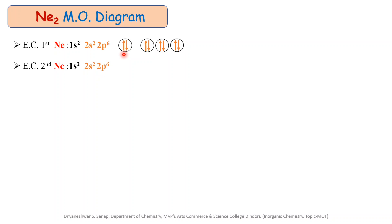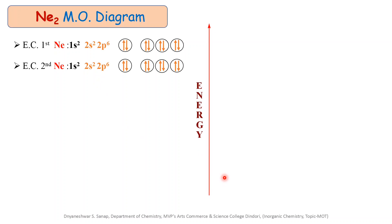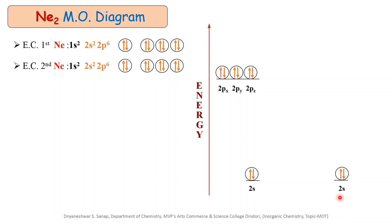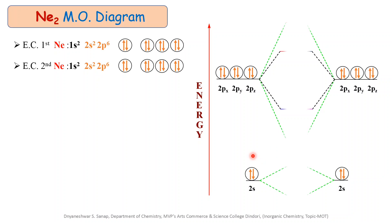Let us write this electronic configuration in tabulated form one by one. For the first atom: 2s² and 2p⁶. Similarly, for the second atom: 2s² and 2p⁶. While writing the actual molecular orbital diagram, we have to first write the valence atomic orbitals in increasing order of energy. The 2s atomic orbital of the neon atom is written on the lower energy side and 2p atomic orbitals on the higher energy side. Similarly, for the second atom, we write 2s at the bottom and 2p at the higher energy side. When these 8 atomic orbitals combine together, they produce 8 molecular orbitals.